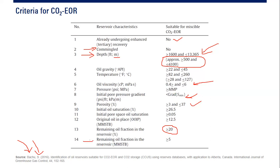The fourteenth and last criterion is remaining oil volume in the reservoir, which should be greater than 5 million stock tank barrels. For an economic project, you need a large amount of recoverable oil remaining. Five million STB is the minimum cutoff, but more is better, as it increases your chance of making the project profitable.